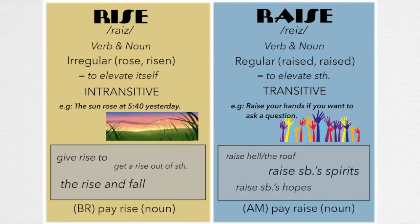Hello there, this is Mark again. Today we're going to look at the difference between 'rise' and 'raise.' Rise, in the yellow square, is irregular, so the forms are 'rose' and 'risen.' Raise instead is regular, so it takes '-ed' at the end: 'raised' and 'raised.' They both mean 'elevate,' but rise means to elevate itself, whereas raise means to elevate something.